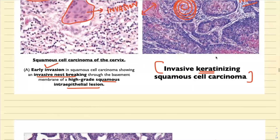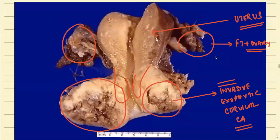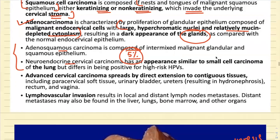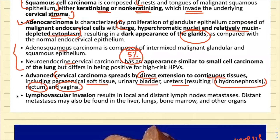Advanced cervical carcinoma spreads by direct extension into contiguous areas — for example, paracervical soft tissue, bladder, and ureters. Ureteral compression may lead to hydronephrosis. It may also involve the pouch of Douglas, spreading into the rectum and vagina. Lymphovascular invasion occurs, and local and distant metastases to the liver, lungs, bone marrow, and other organs are common.